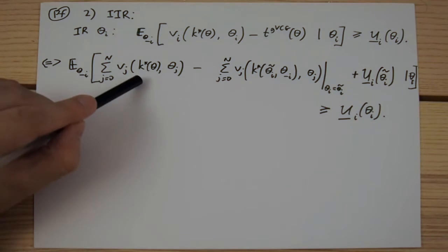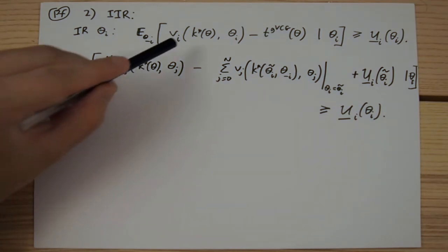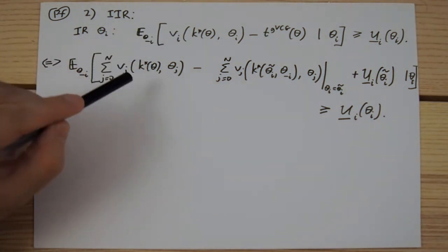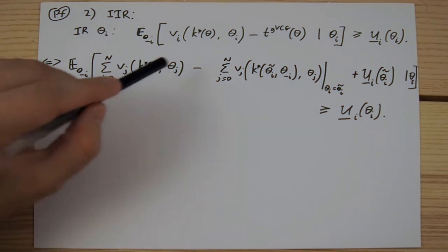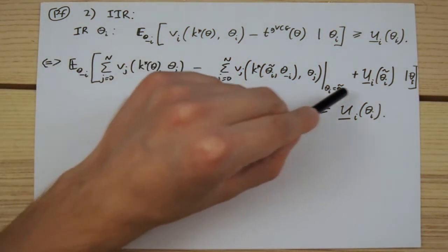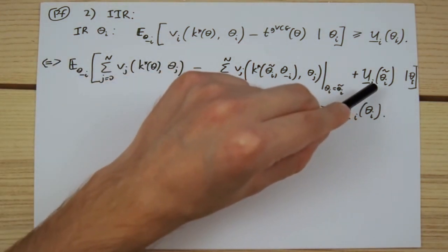Here, the first term is composed of player i's real utility and the Groves' transfer, while the remaining terms in the expectation come from the type independent constant in the GVCG transfer rule.